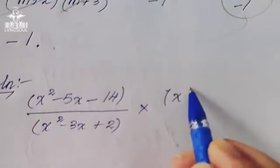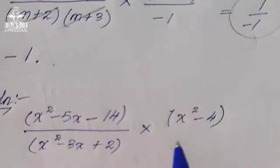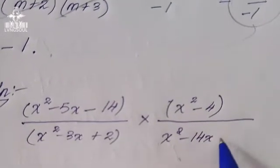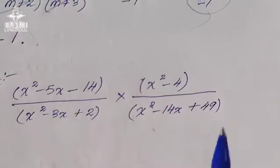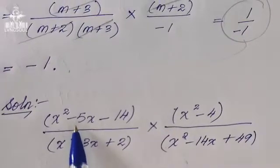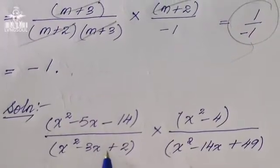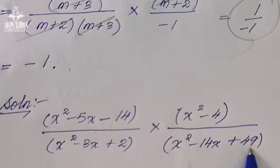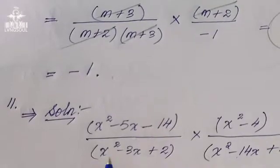Divide them into: x squared minus 4x plus 2 squared, so x squared minus 14x plus 49. Splitting the middle term — the number to multiply is 49, and 14 is the middle term. 7 times 7 is 49, and 7 plus 7 is 14, so we split as minus 7x minus 7x.